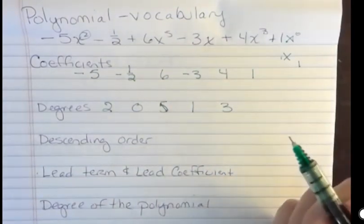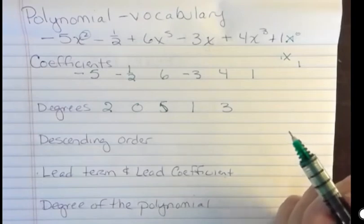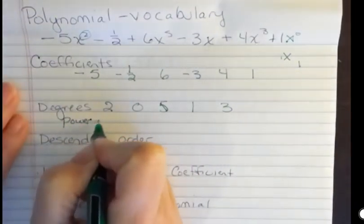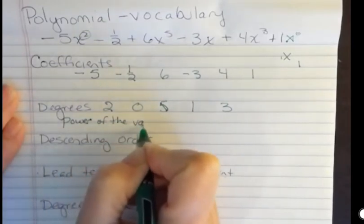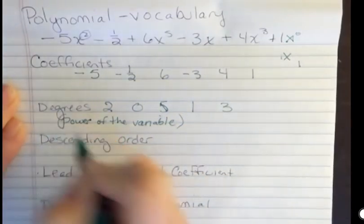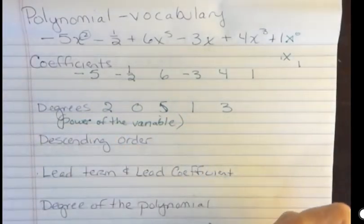So I can list the degrees just by looking at the power of the variable. Not the power of the coefficient, but the power of the variable.